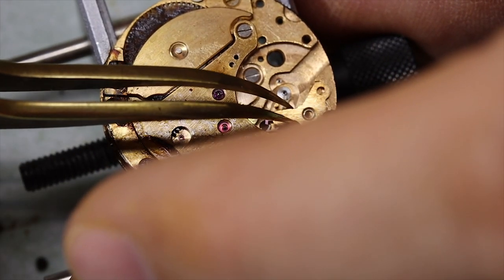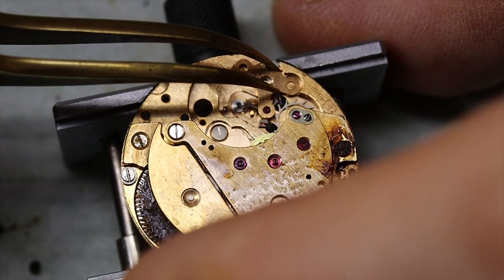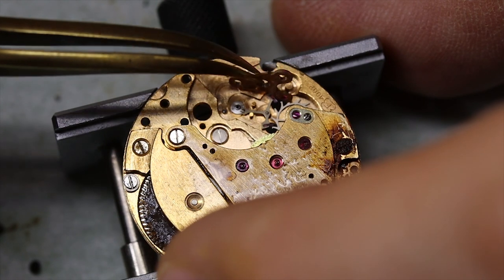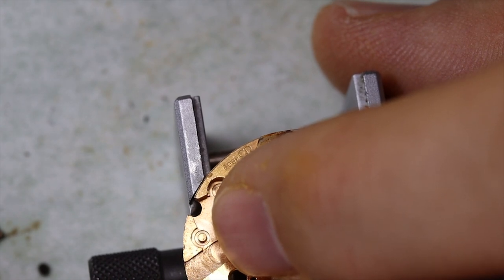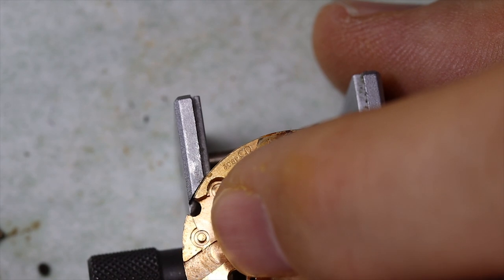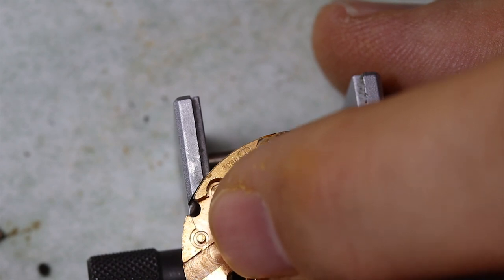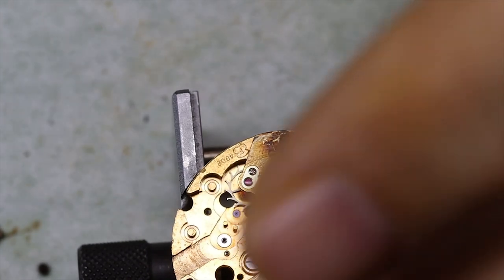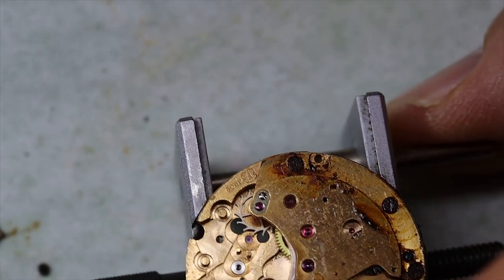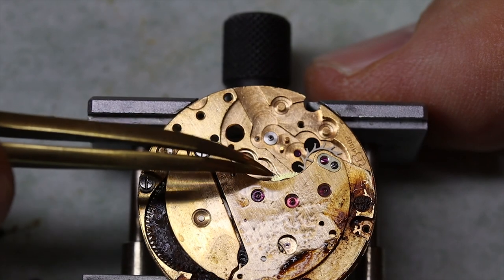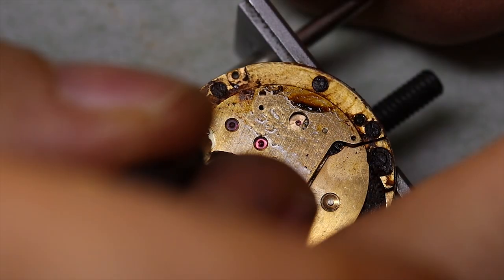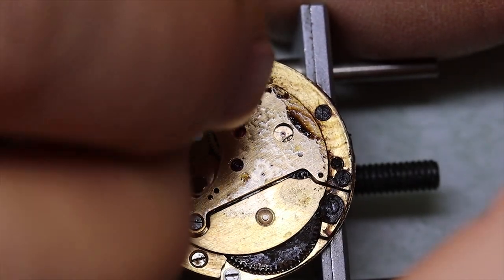Now since we saw that there is power on the mainspring but we cannot let it down because the click spring has completely rusted, what we're going to do is simply use our finger to gently let down the mainspring by pressing on the third wheel. Of course when you do this, be very gentle. Let's see, there's still a little bit of power left. And since the movement is so dirty, we're also going to take off this cap jewel on the escape wheel.